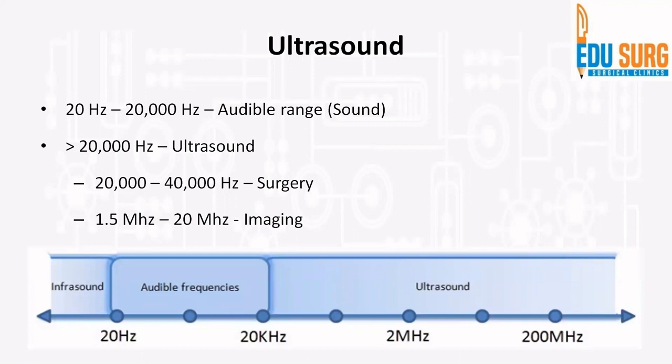As you saw, the name involves cavitation, ultrasound, and suction and aspiration. First, let us see what ultrasound is and the different frequencies at which ultrasound is used in medicine. When we talk of frequencies, the audible frequencies are between 20 Hz to 20,000 Hz. That is the audible range — below that is infrasound, above that is ultrasound. So anything above 20,000 Hz is ultrasound.